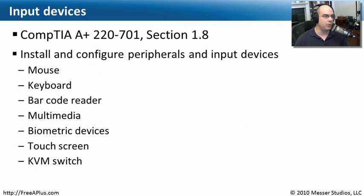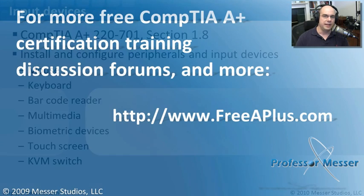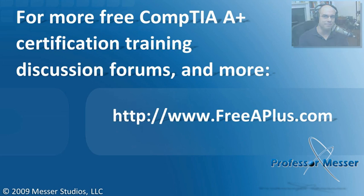That covers what we needed to know for our CompTIA A+ 220-1001 Section 1.8. We've gone through all of these different input types, and at this point we should be able to work with our mouse and keyboard, multimedia devices, barcode readers, and much more. If you'd like to watch any of our other free A+ videos, join our Facebook page, follow us on Twitter, or more, visit our website at freeaplus.com.